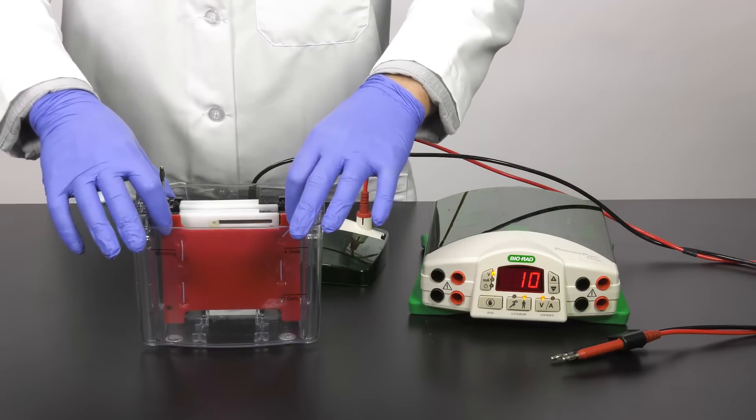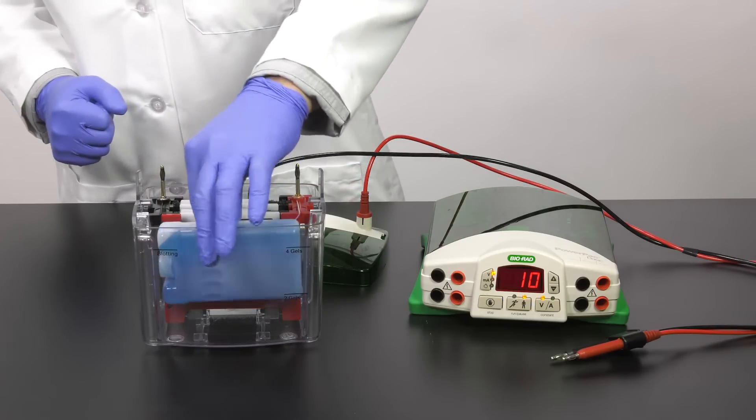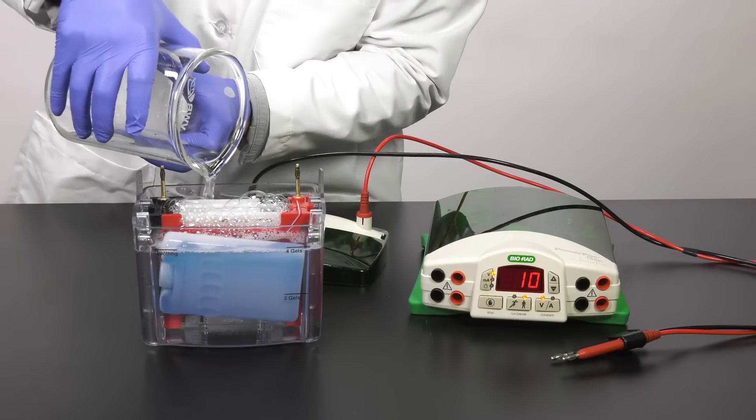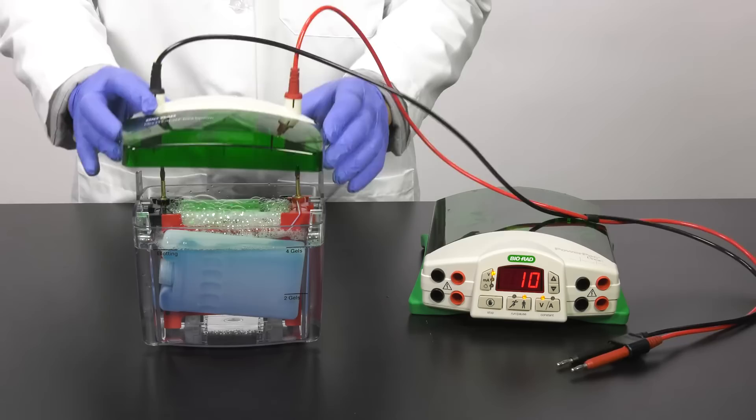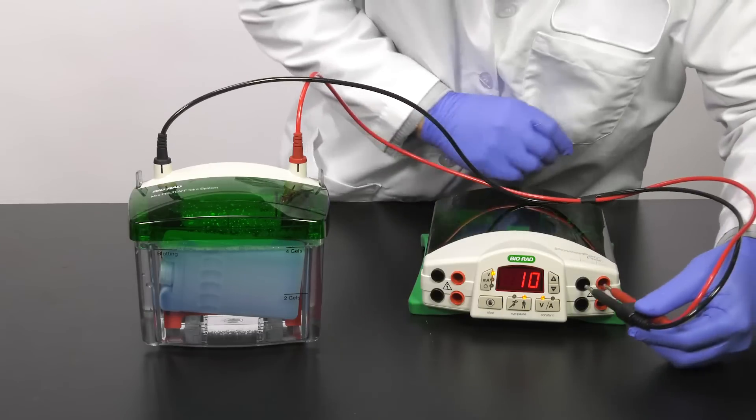Place the module into the transfer chamber. Add a frozen cooling unit and fill the chamber to the appropriate level. Attach the lid and connect the leads to the power supply. Red to red and black to black.